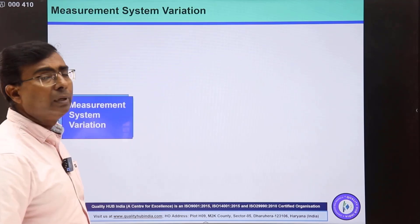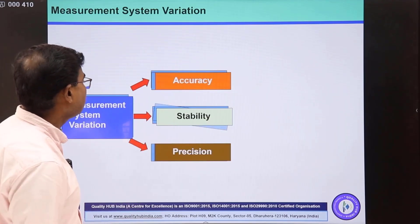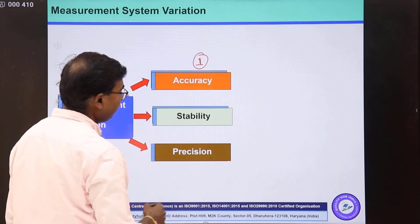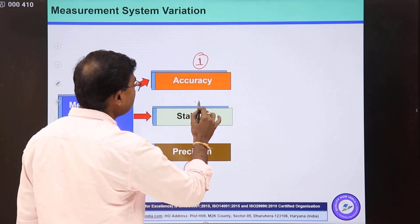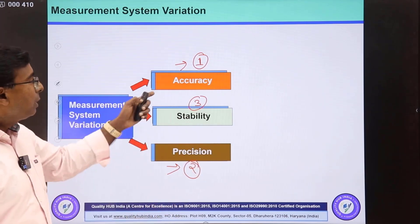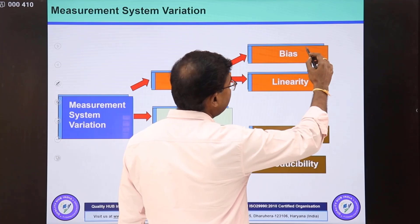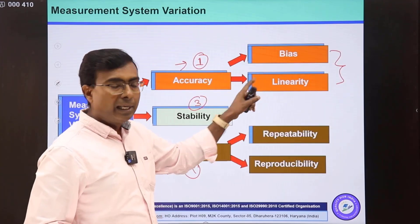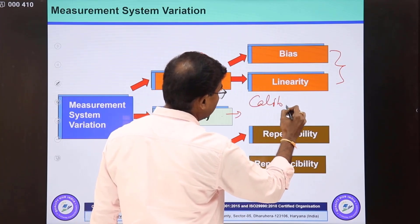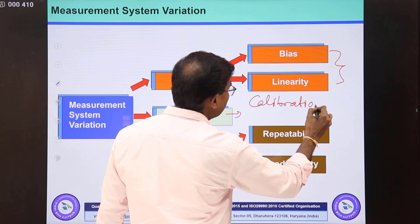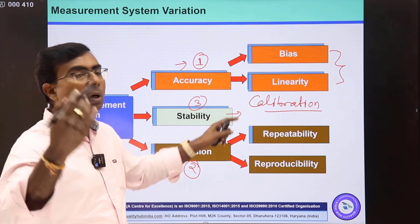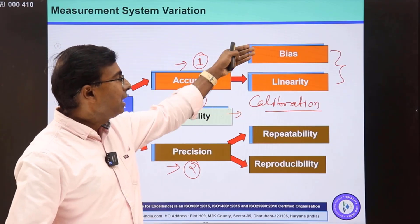What are the types of variation we can have in the measurement system? Measurement system variation can be divided into three categories: the first one is accuracy, the second is precision, and the third is stability. The main components are accuracy and precision. In accuracy, we have bias and linearity. Bias, linearity, and stability are part of your calibration activity. So when you conduct calibration of your instruments or gauges, or send them to an outside lab, they are basically doing a bias study.